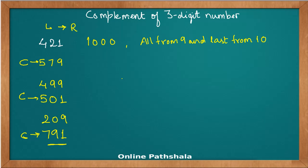Now let's look at an interesting case: what if you have a 0 at the end? Take the number 780. This is a special case — you modify the 'all from 9, last from 10' rule so that you do not count the 0 as a number. The digit just before the units-place zero becomes the one subtracted from 10. This exception applies only when there is a 0 in the units place, not when 0 appears in the middle.